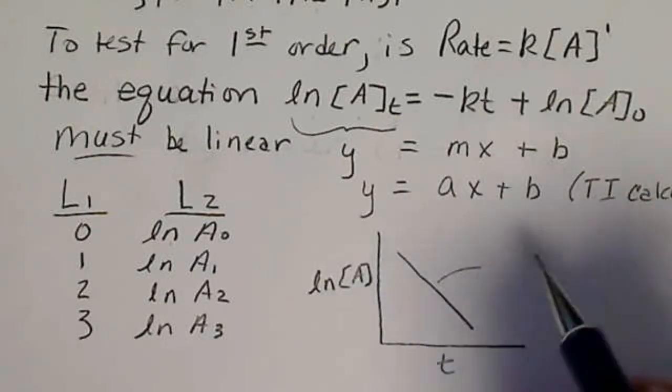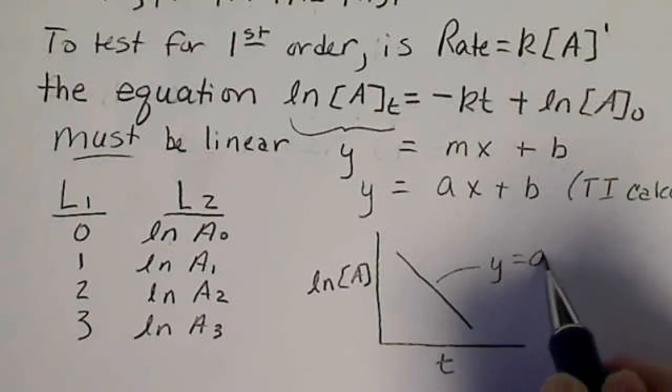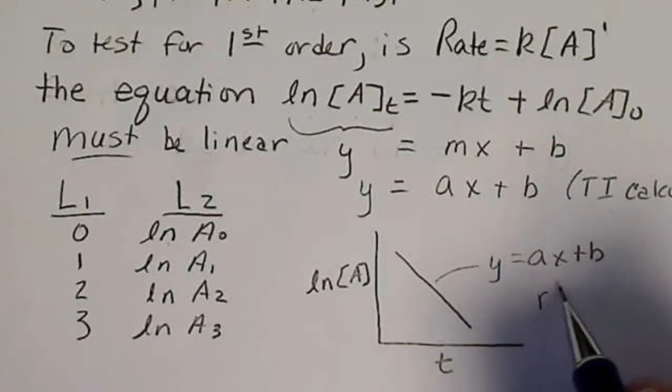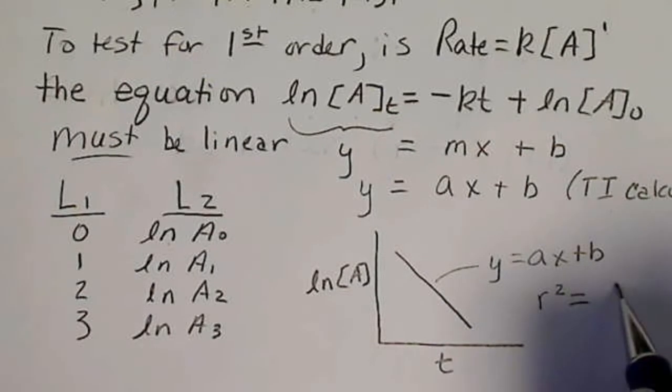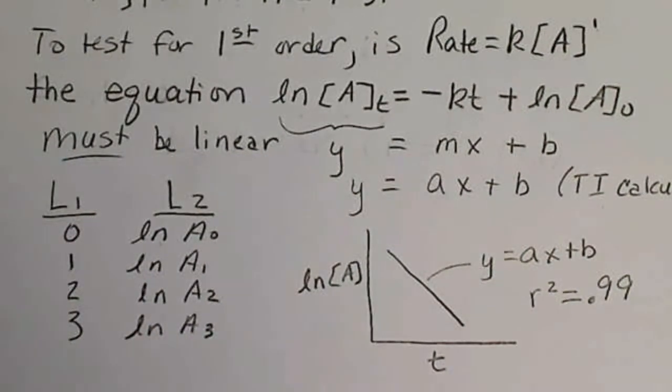And so the line of best fit, according to the TI calculator, would be Y equals AX plus B. And the R squared value needs to be at least 0.99 in order to be a linear equation.